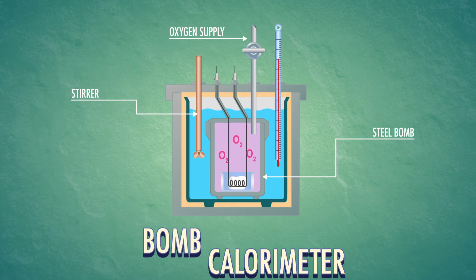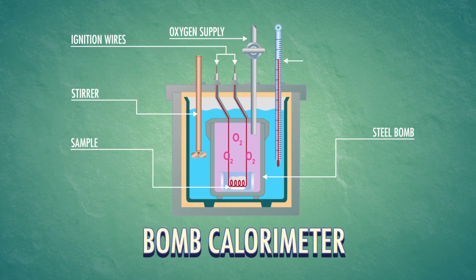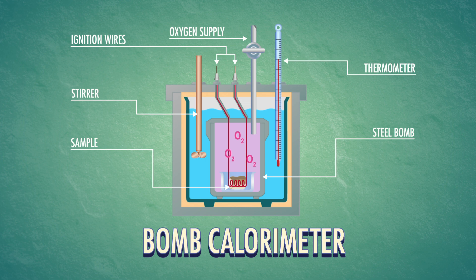In the inner chamber of an instrument called a bomb calorimeter, we burn a compound, measure the temperature change, and use that measurement to calculate the energy of the reaction. Don't worry, it's safe. But if there was a bunch of energy in a closed system like this, that's a bomb. Hence the name.